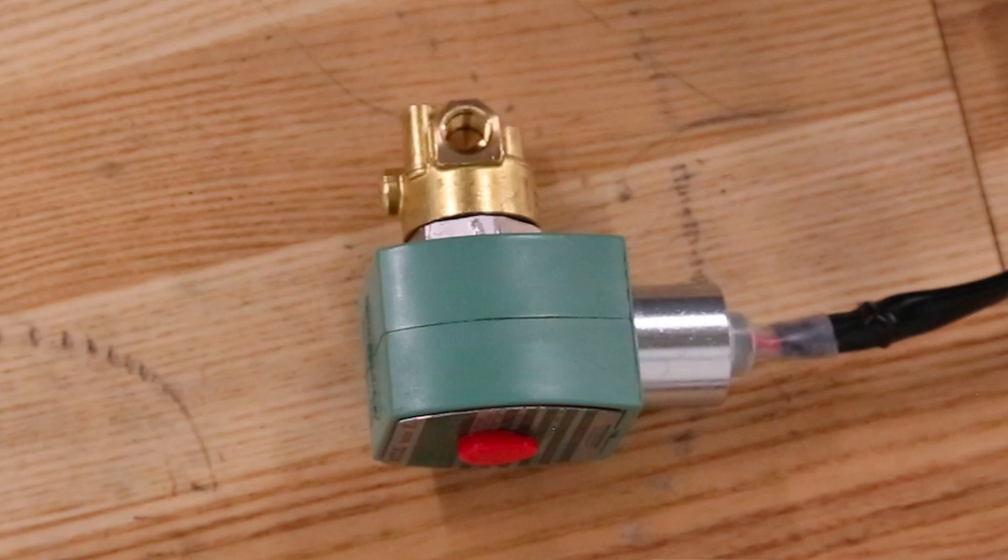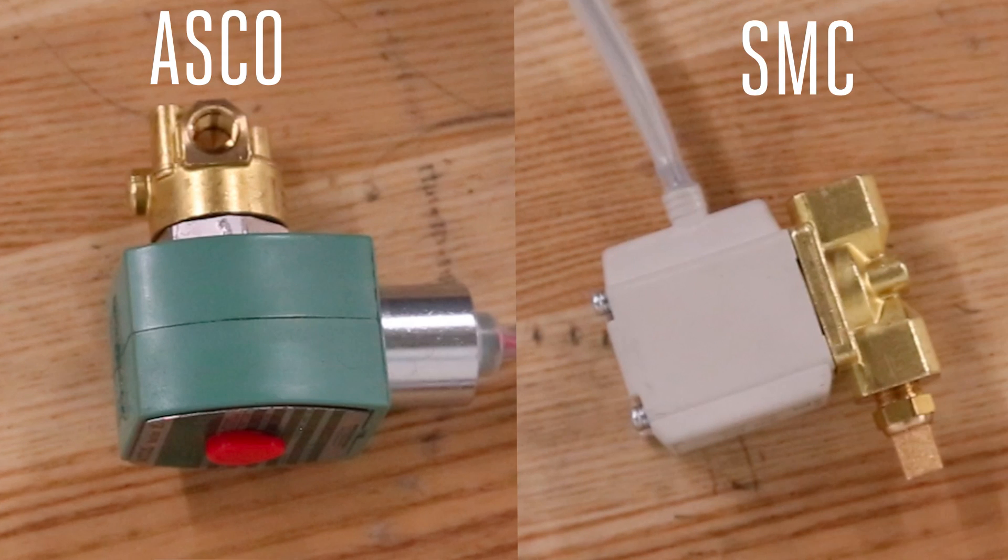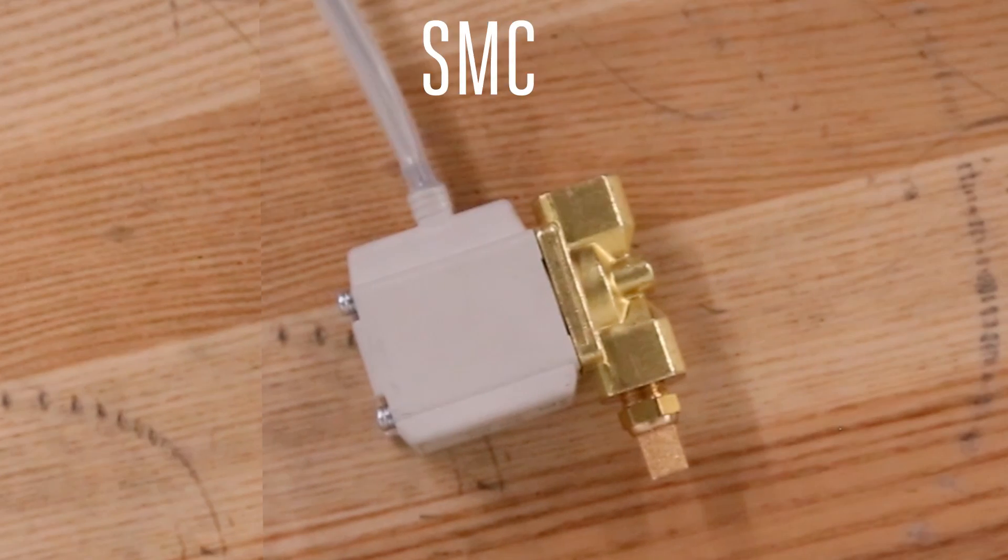If your solenoid looks like this, it's an ASCO brand. If it looks like this, it's an SMC brand. We'll start with the SMC.